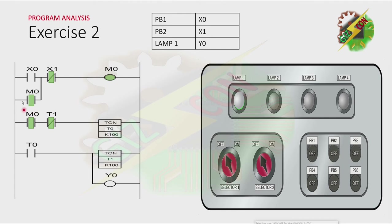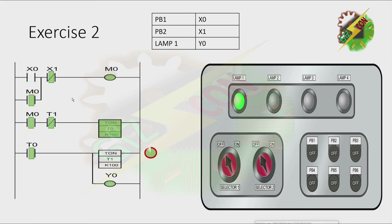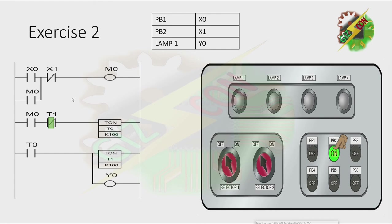To turn off M0, we need to press PB2. Let's go to our simulation. Let's press PB1. As you can see, the cycle stopped after we press PB2. And that's how we solve exercise 2. Now let's go to our next exercise.